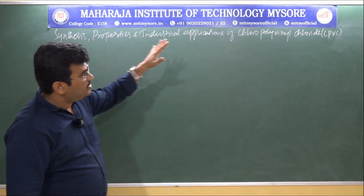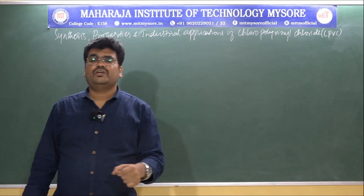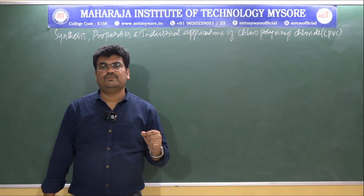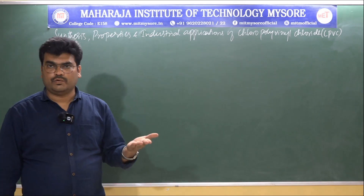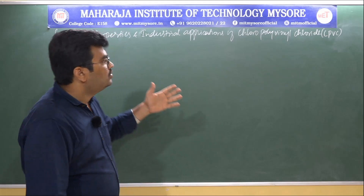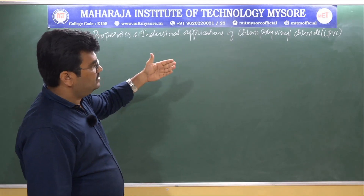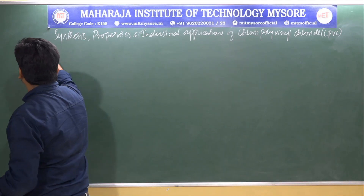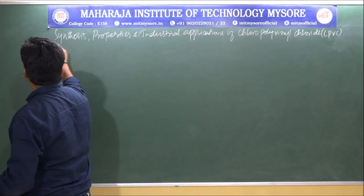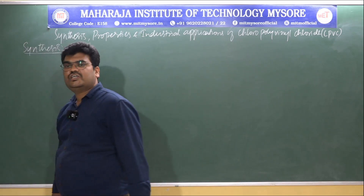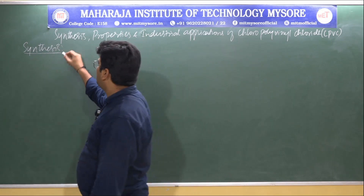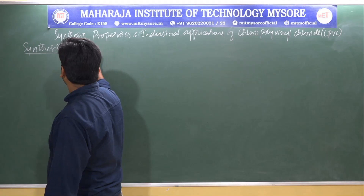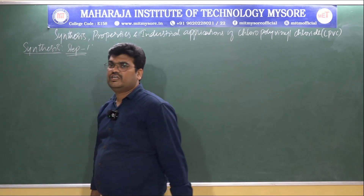Overall, chloropolyvinyl chloride is prepared by the chlorination of polyvinyl chloride polymer. The synthesis can be explained in two steps. Step one consists of the preparation of vinyl chloride.